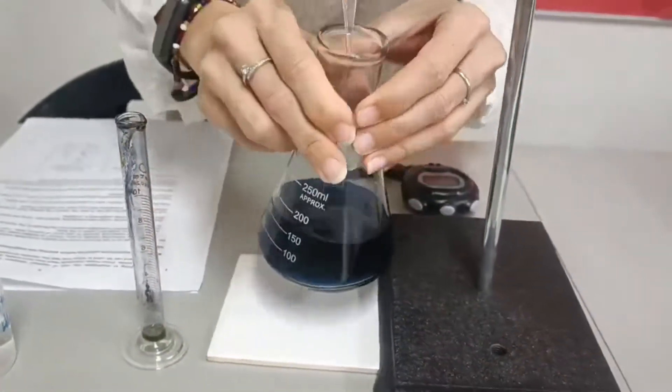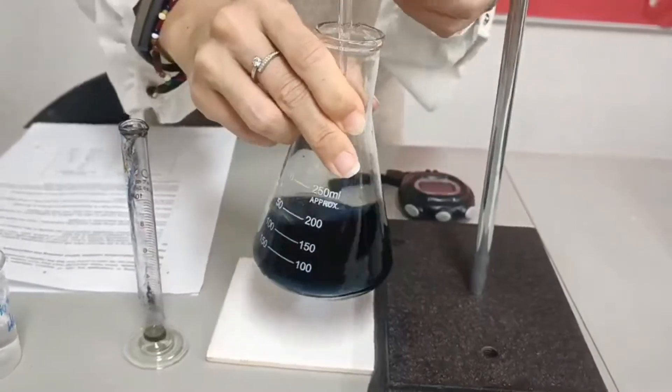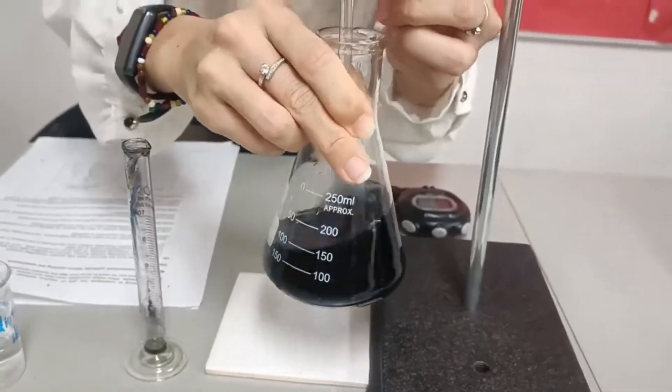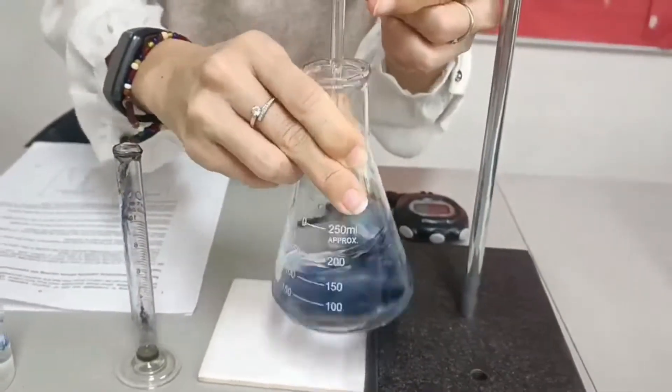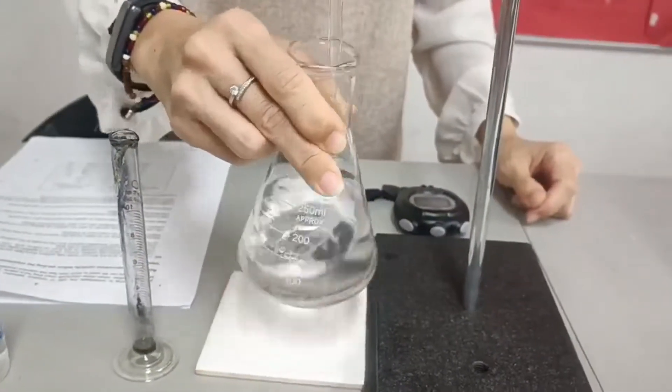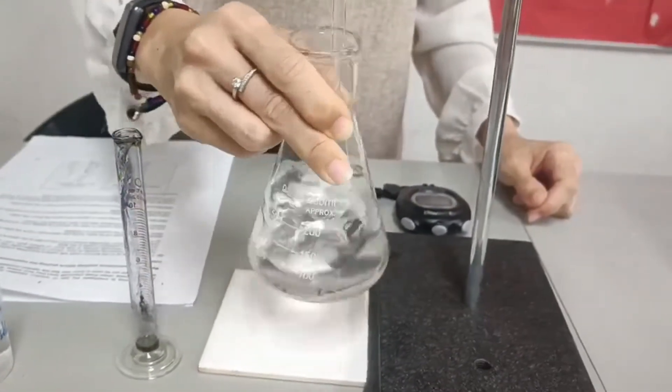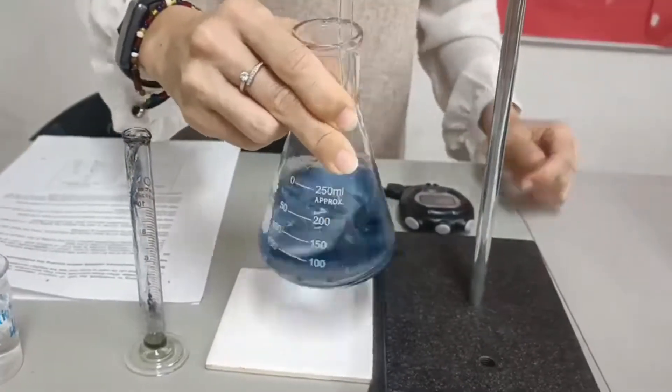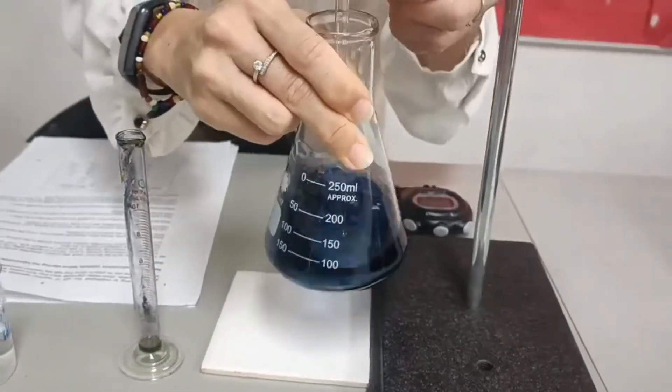And then, now, while still swirling, you add half a ml of thiosulfate solution. Keep on swirling and notice the time when it turns to blue. That's your second reading. Take it down.